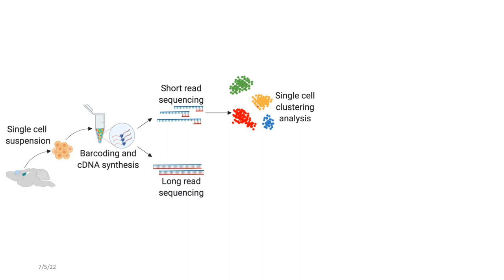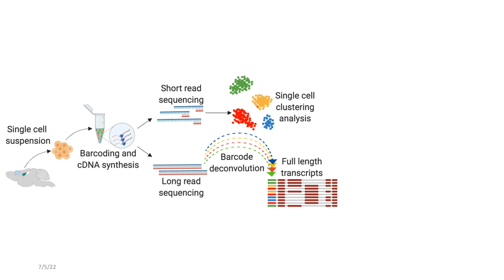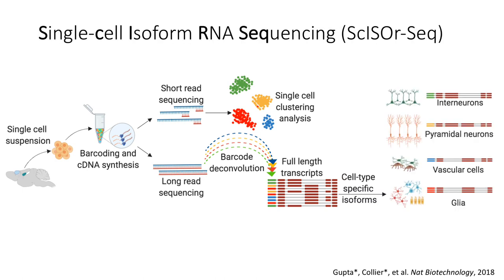What that means is because it's the exact same cDNA molecules sequenced on two different platforms, you can deconvolve the single cell barcodes to get exactly which cell each full-length transcript comes from and resolve cell-type specific isoforms. So we call this technique ScISOr-Seq and you can read about it in our paper that we published in 2018.